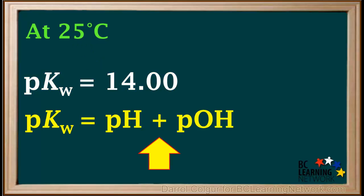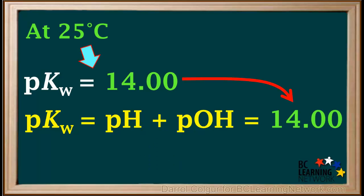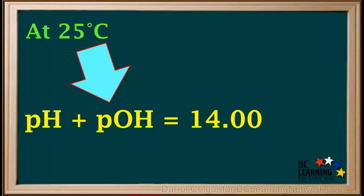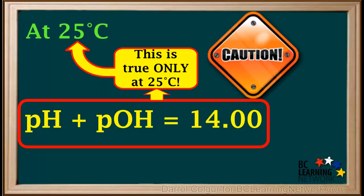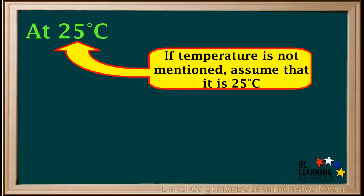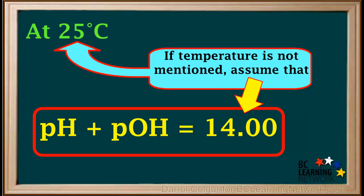We can say specifically that at 25 degrees Celsius, pKw is equal to 14. Remember, we had recently determined that pKw is equal to pH plus pOH. And at 25 degrees, pKw is equal to 14. Therefore, we can say that at 25 degrees, pH plus pOH is equal to 14. You'll be using this equation a lot — just make sure you use caution. Remember, this is true only at 25 degrees. If the temperature is not mentioned in the problem, we can assume that it's 25 degrees and that pH plus pOH is equal to 14.